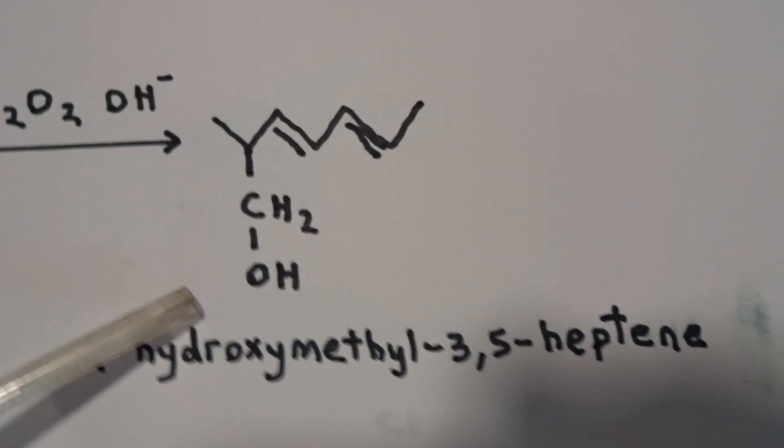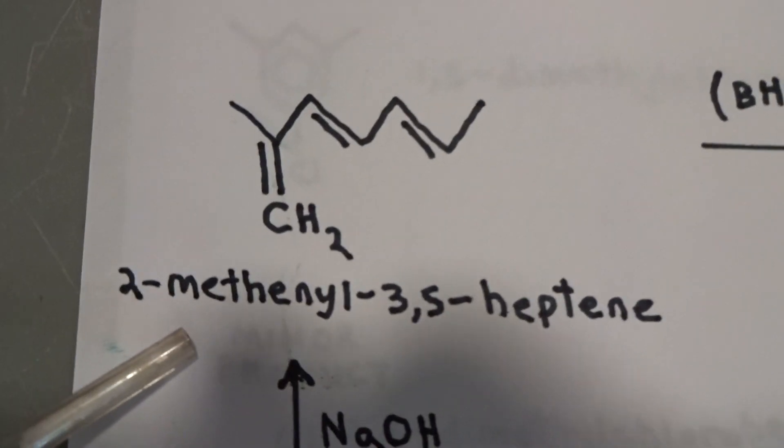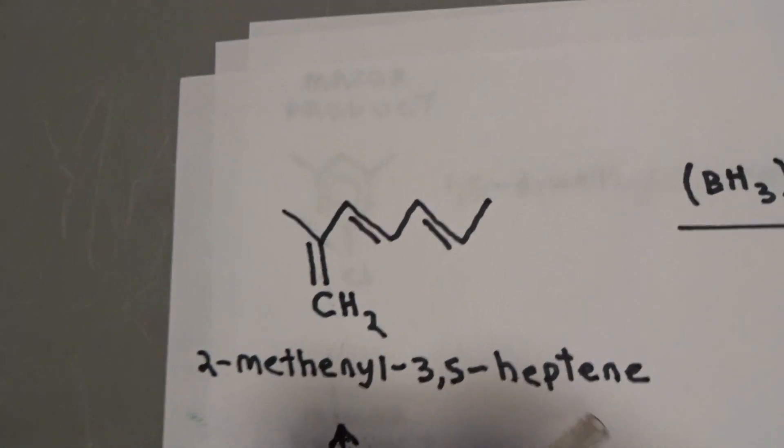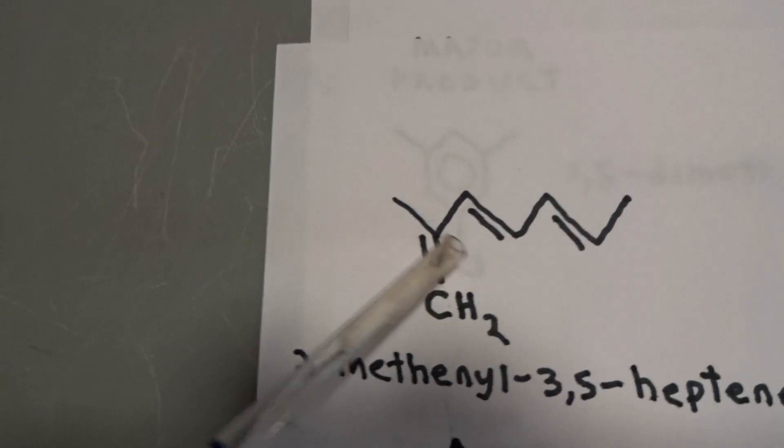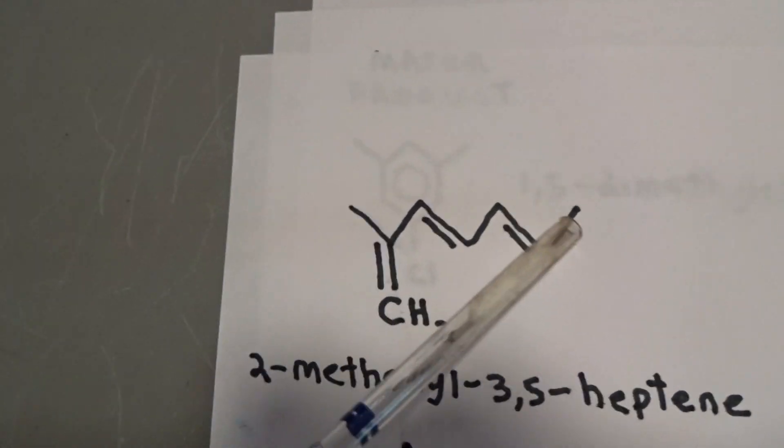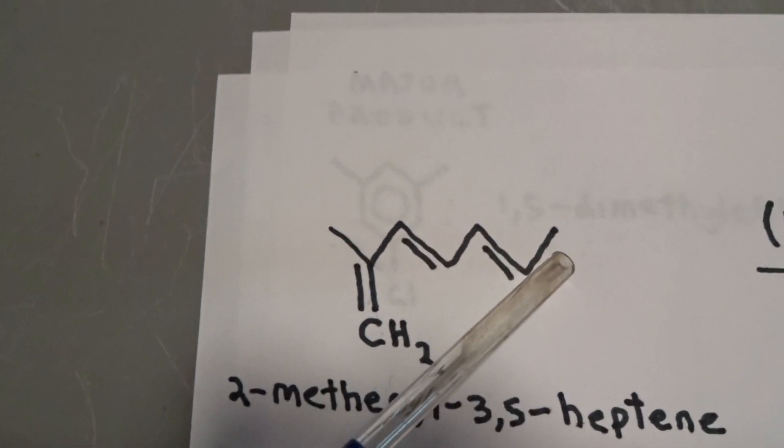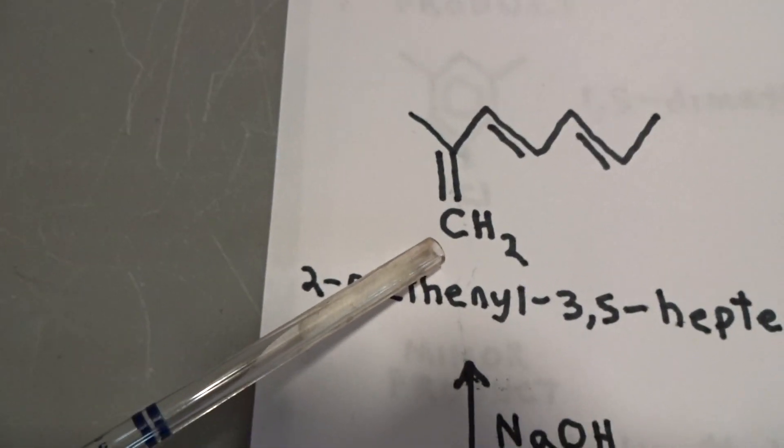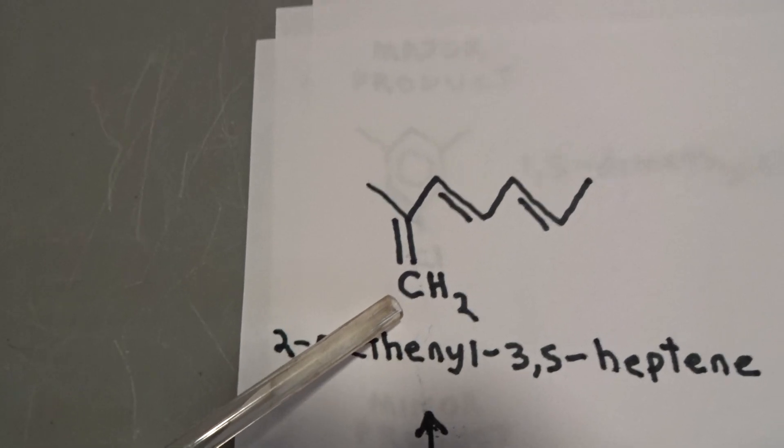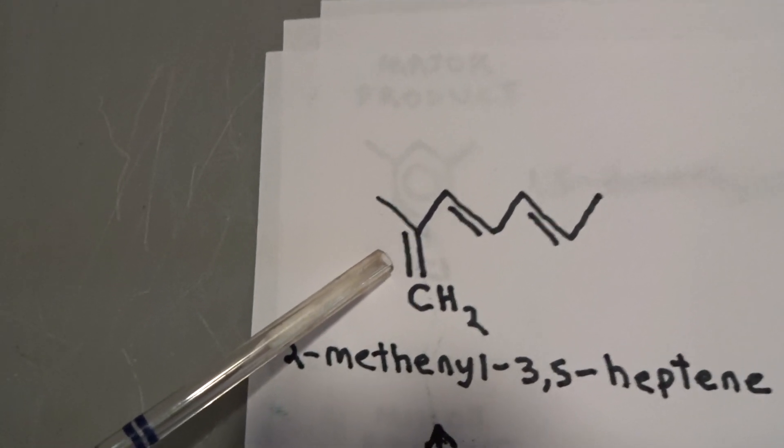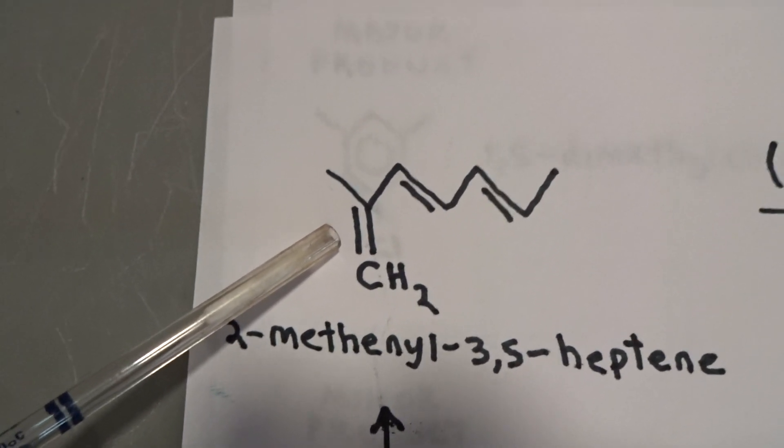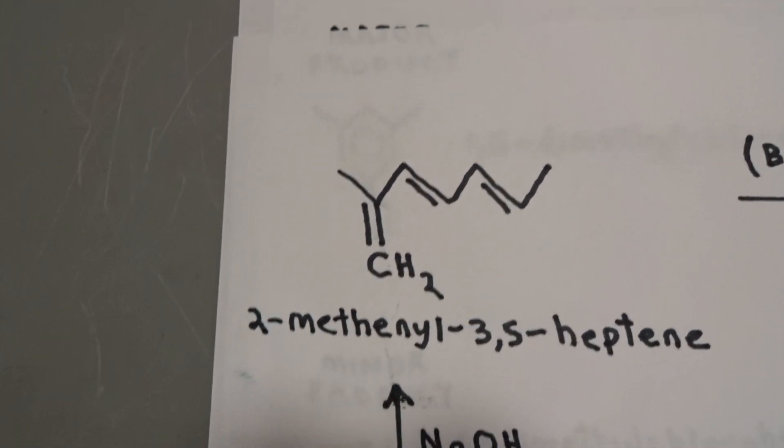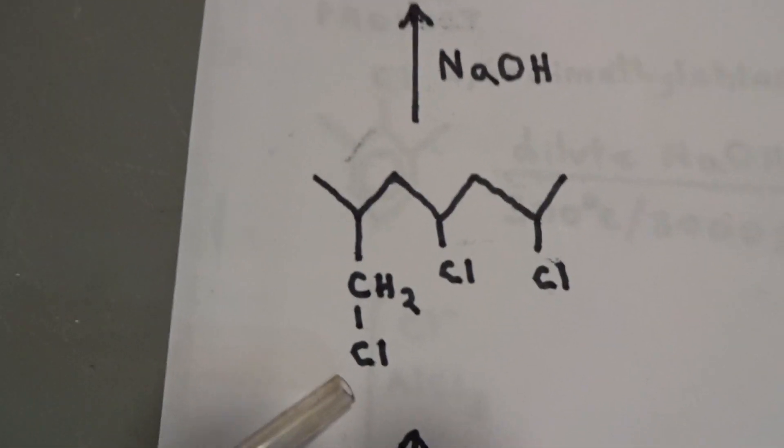Here we see the molecule that we wish to make. How can we make it? We can make it from 2-methenyl-3,5-heptene with double bonds in the structure, 7 carbons, numbering the longest carbon chain, with a double bond to a methyl group. Now, we will need to get rid of this double bond. This is 2-methenyl-3,5-heptene. We'll start from this molecule.